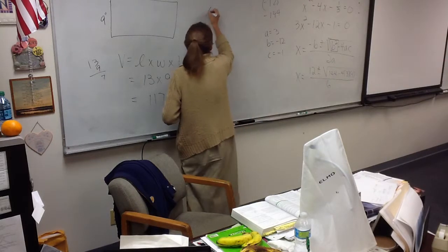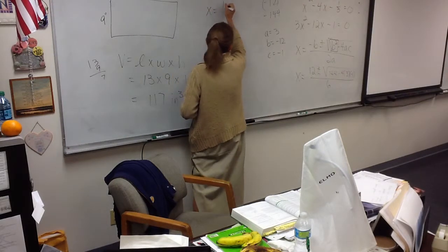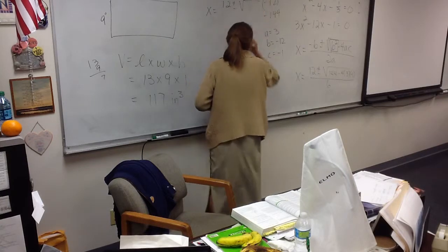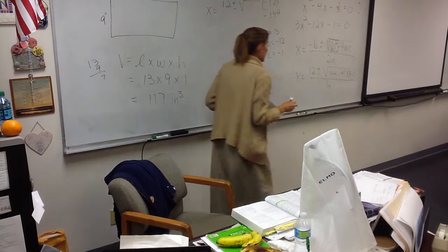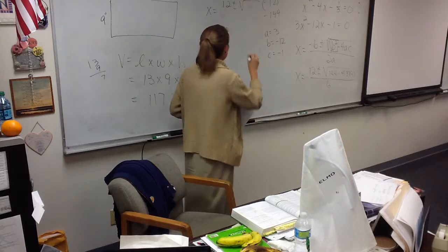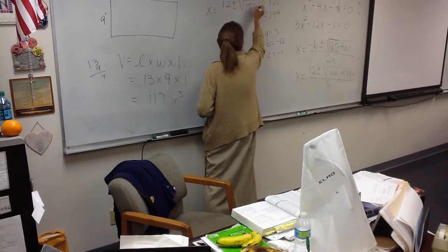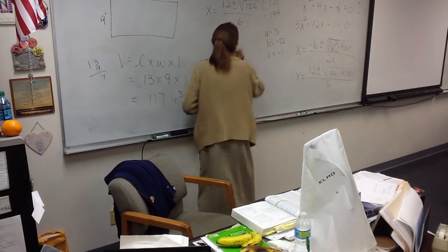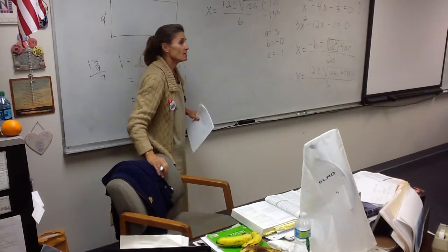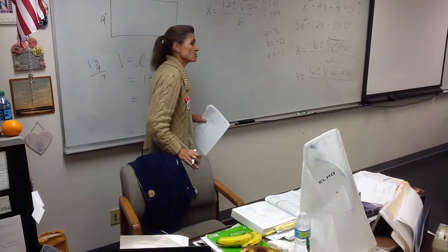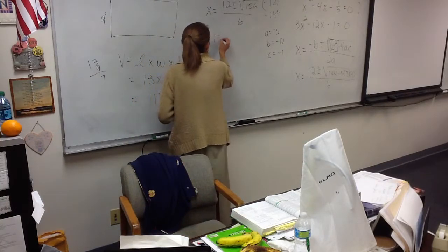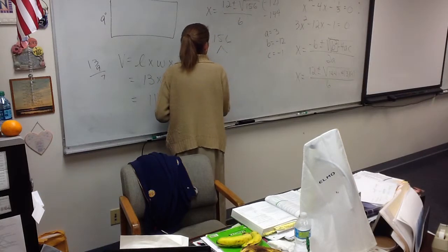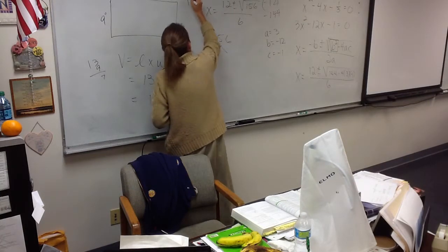All right. So what have I got underneath my radical? 12 plus or minus the square root of what? 144 plus 12. 144 plus 12. That's right. Is that 156? Yeah. This is not new stuff. This is review. It's extra practice for us. So now we've got to break down to 156, right? Right.